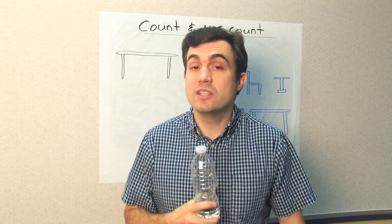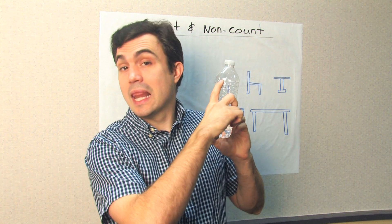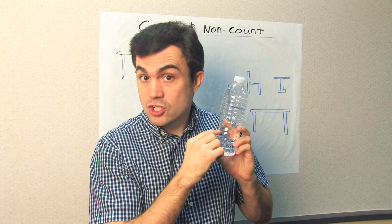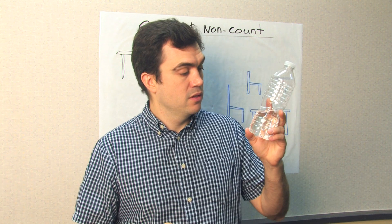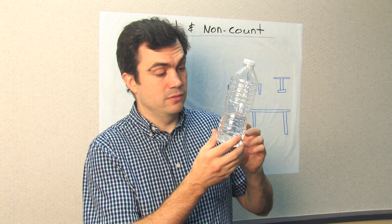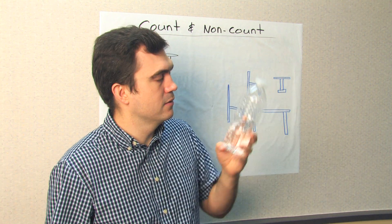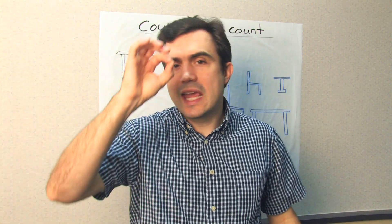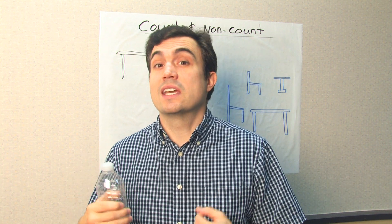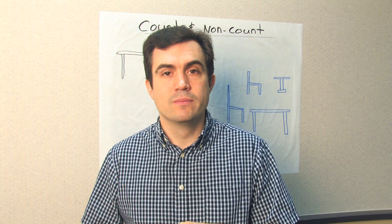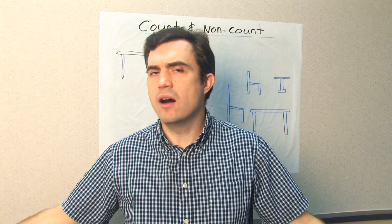So some can be used with countable or non-countable — it just depends on the situation. But a little, or a lot, or much, or not very much — these are non-count words. How much water is in the bottle? Not very much. A little. A little water is in the bottle. How much air is in the bottle? How much air is in the room? We can't count the air. There might be a unit of measurement that we can count, but that is not the question. The question is how much air is in the room? A lot of air.